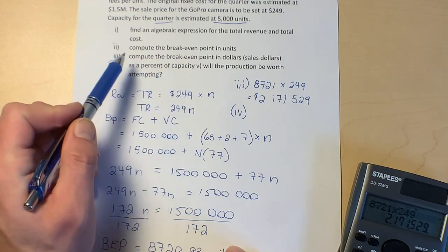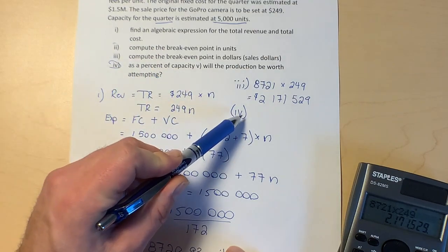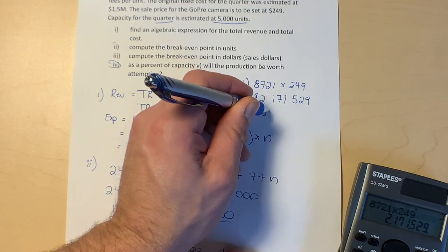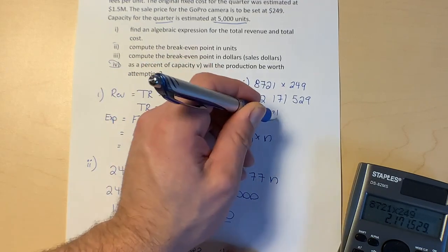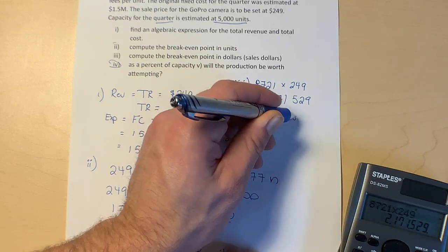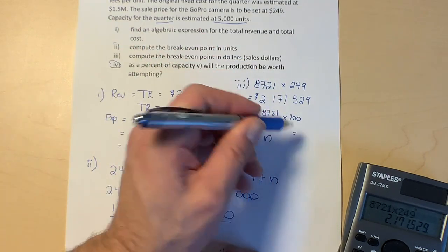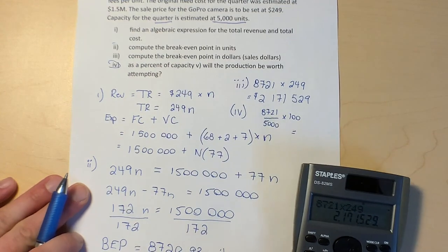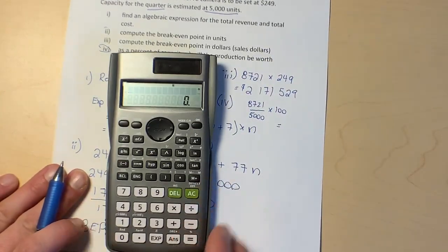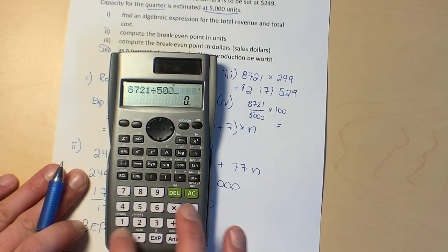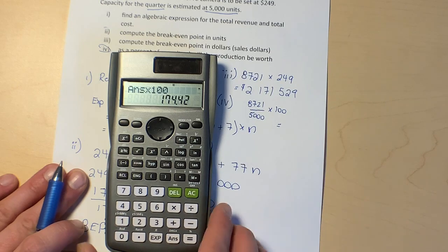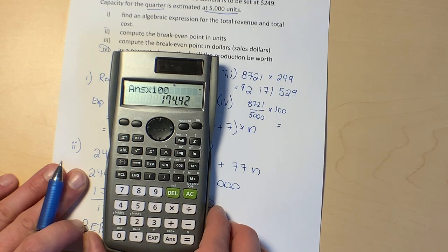As a percent of capacity, well, we're going to put the number of units 8,721 divided by 5,000, divide those and then multiply by 100. 8,721 divided by 5,000, so it's more than 100 percent, times 100 gives us 174 percent of capacity.